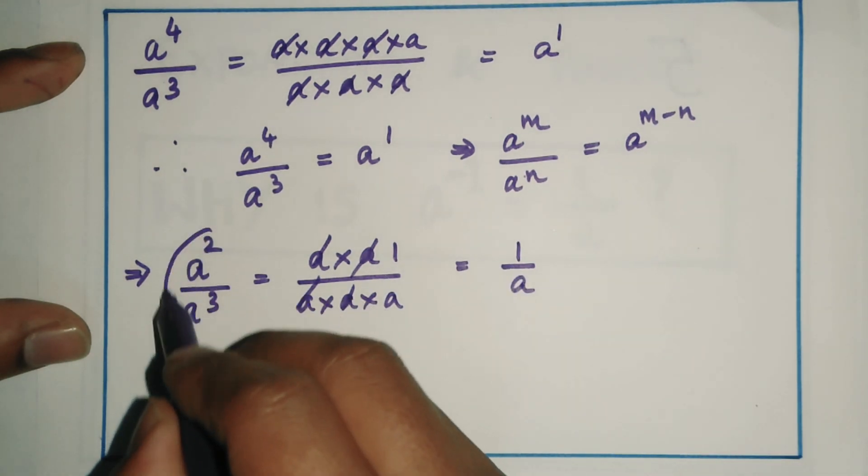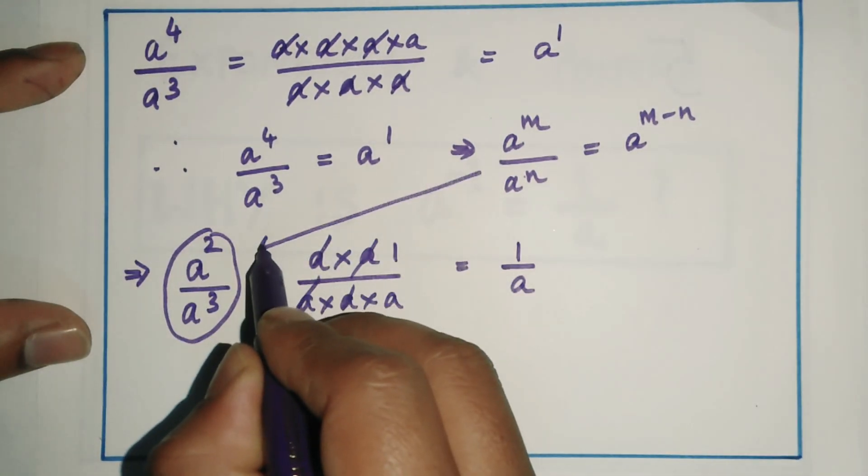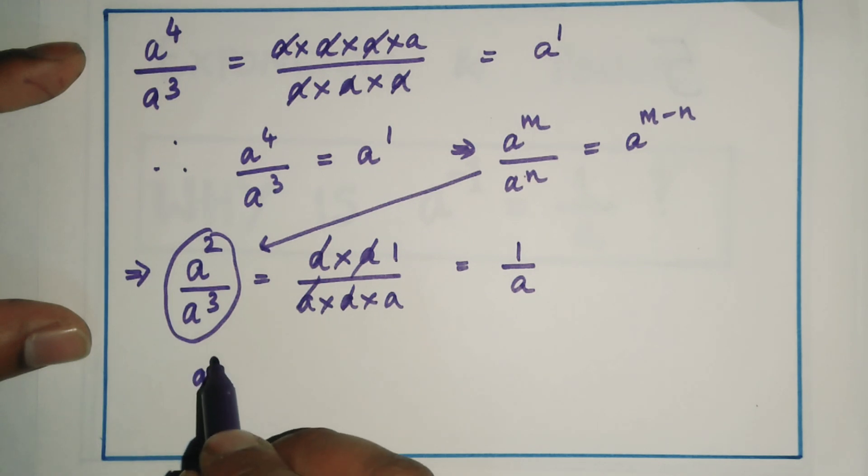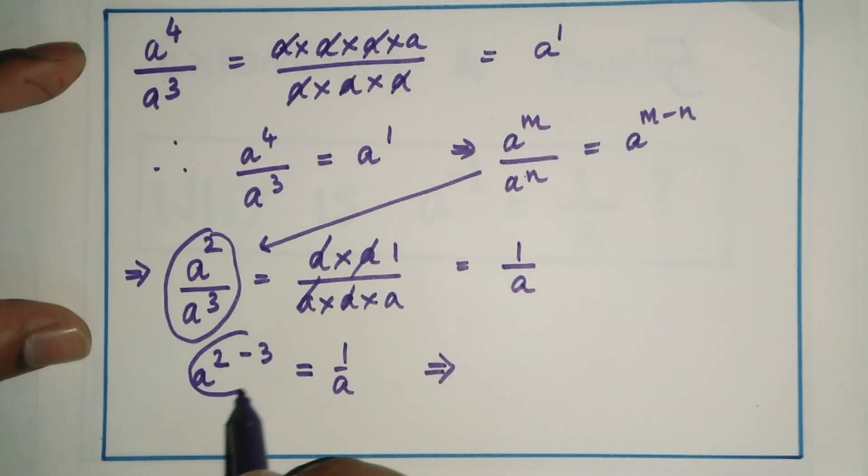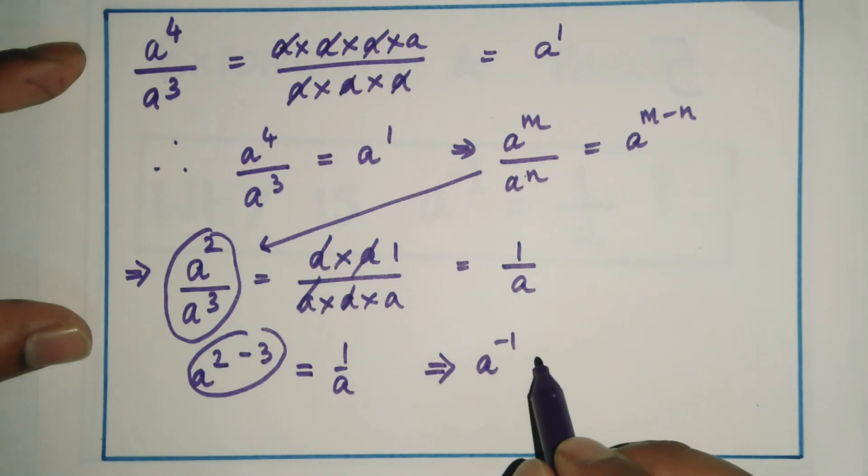On applying this formula to this problem, I get a^(m-n) equal to 1/a. This gives us the answer a^(-1), because 2 minus 3 is -1, equals 1/a.